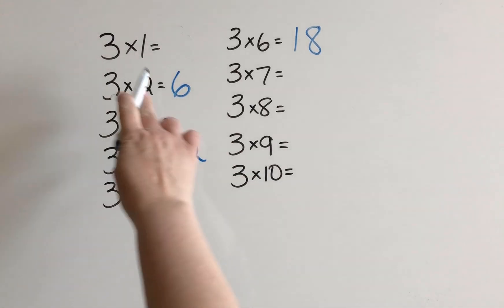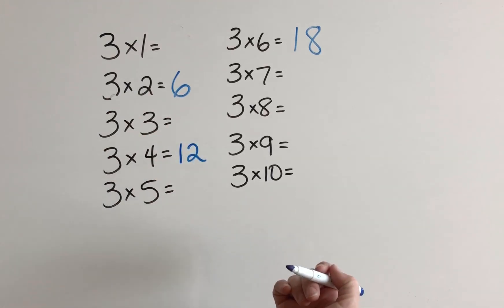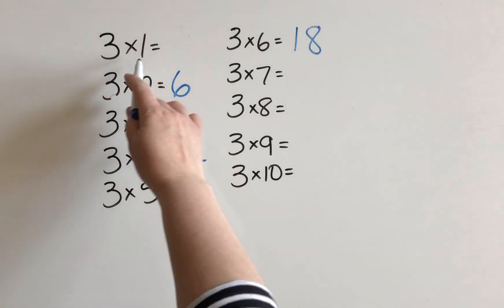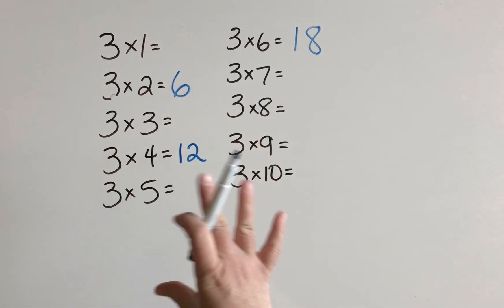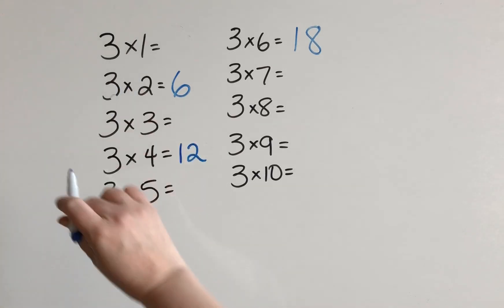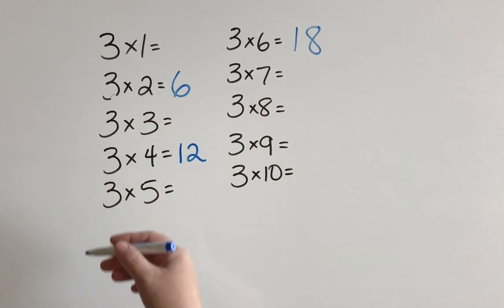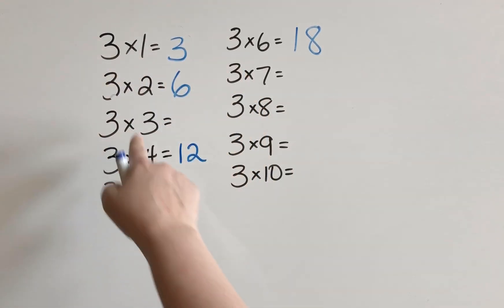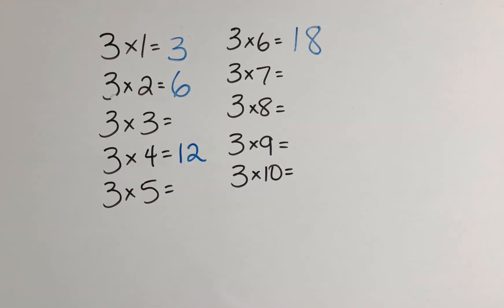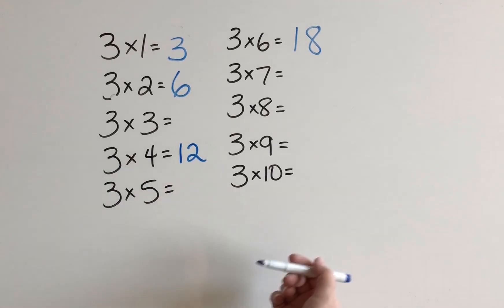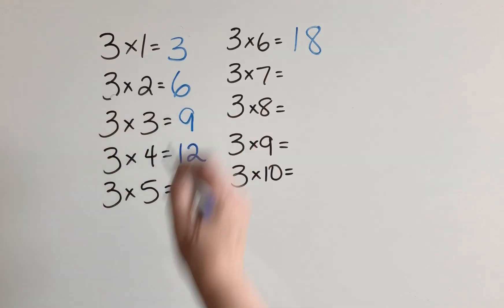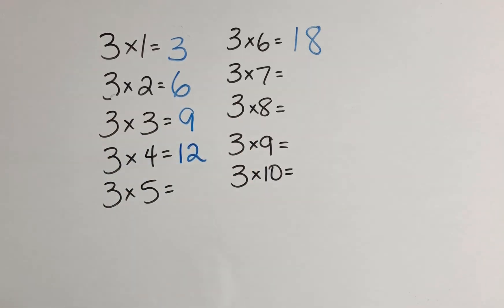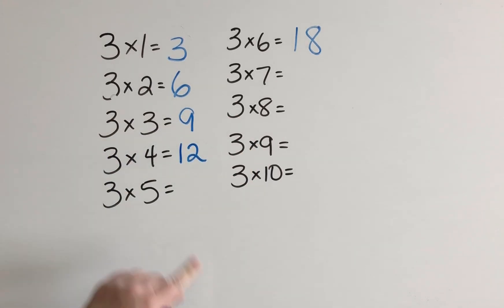Now let's try doing this without the blocks. Three times one — that's probably pretty simple, but if we think of it using doubles first, the double of one is two, and then add one more group of one to make three. For three times three, we can think the double of three makes six, and then one more group of three makes nine. Three times five — the double of five makes ten, and one more group of five makes fifteen.